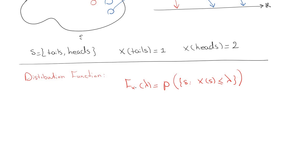In which x is a random variable and lambda is a dummy variable. It means that it could be any value.